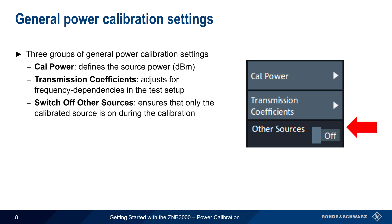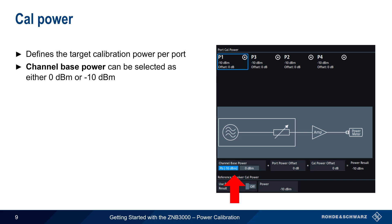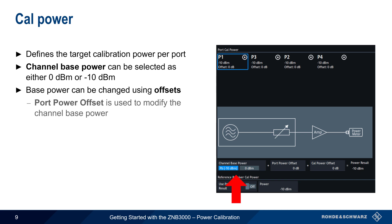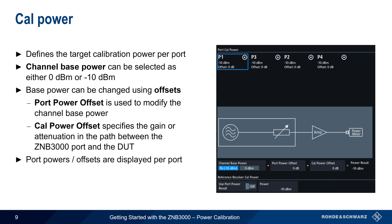CalPower defines the target calibration power and is configured individually per port. The channel base power can be selected as either 0 or minus 10 dBm. This base power can then be changed using two different kinds of offsets. The first is the Port Power Offset, which is simply used to modify the channel base power. The second is the CalPower Offset, which is used to specify the amount of gain or attenuation in the path between the ZNB3000 output and the device under test. The Port Power and Offsets are displayed on a per-port basis at the top-left portion of the dialog.